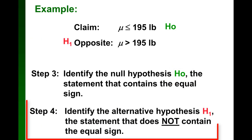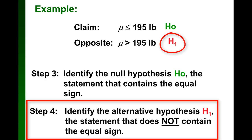Finally, step four is to identify the alternative hypothesis, which is the statement that does not contain the equal sign.